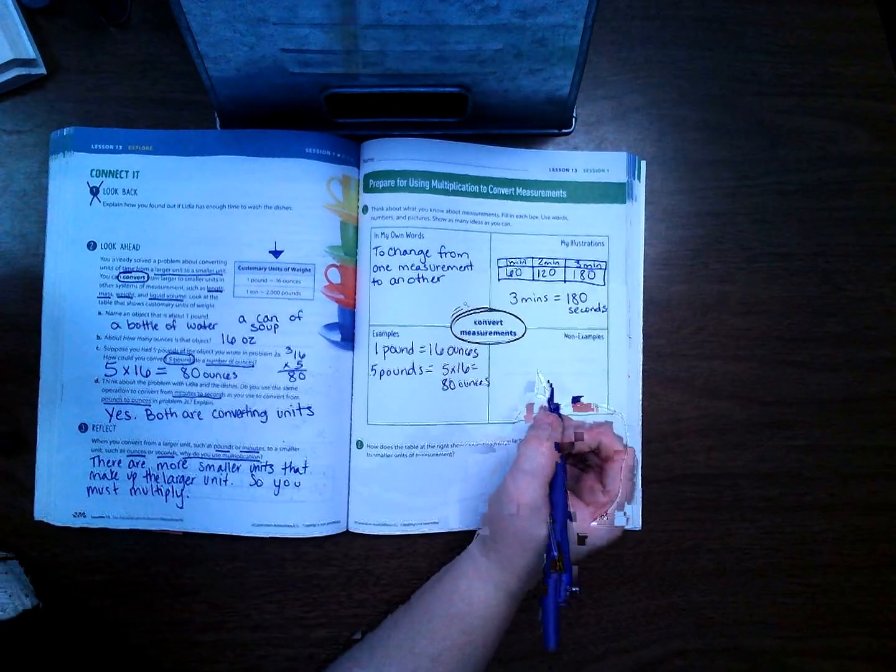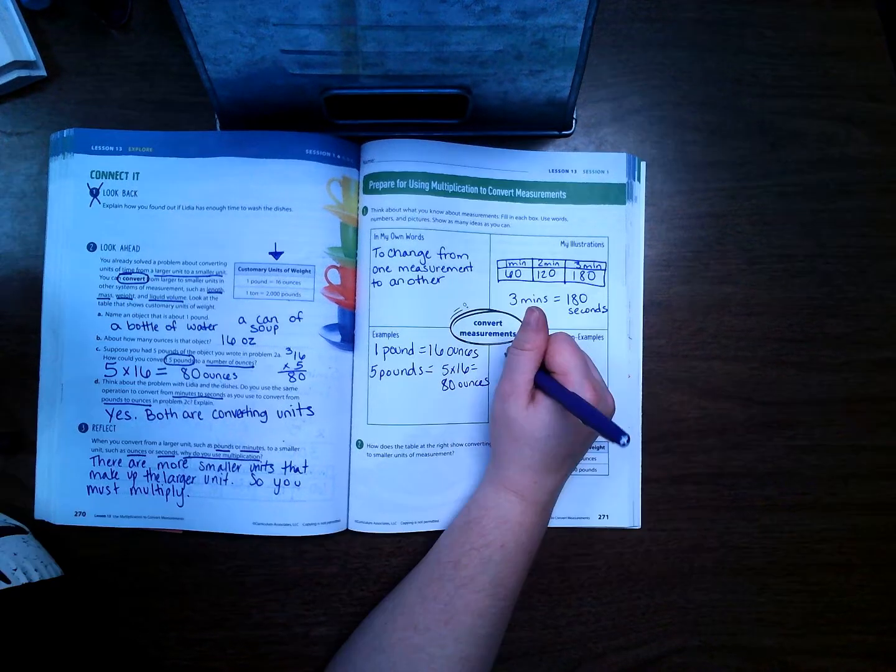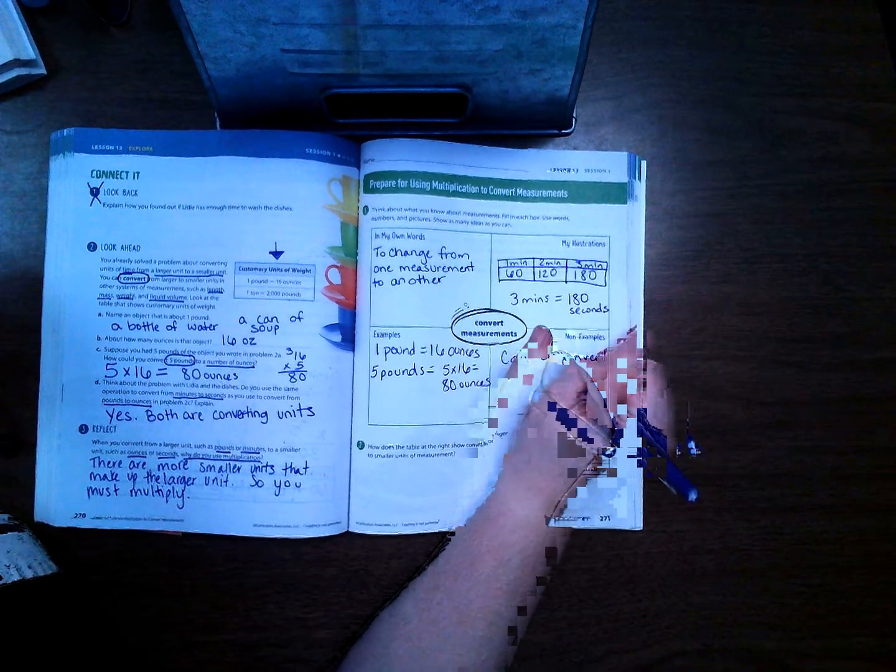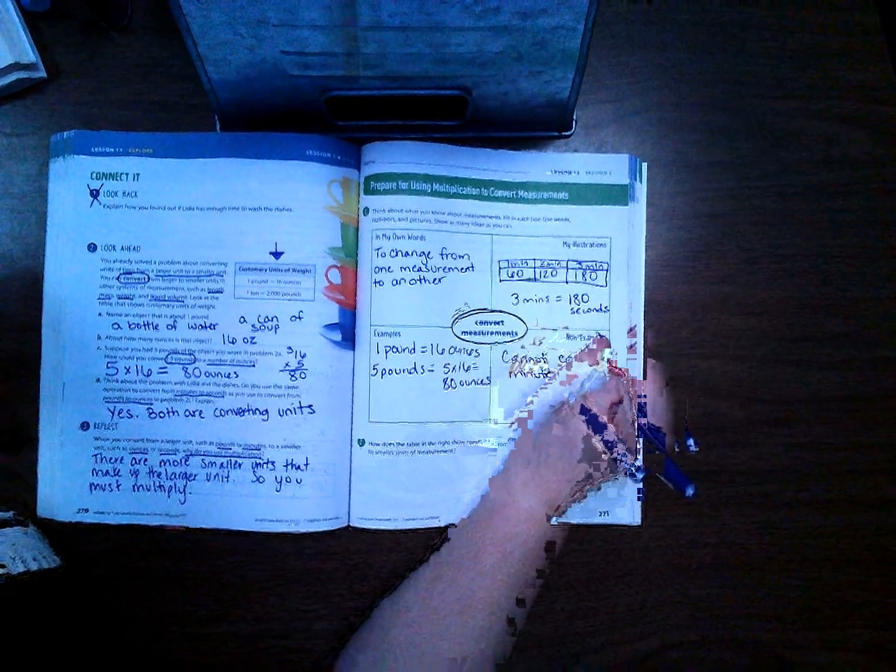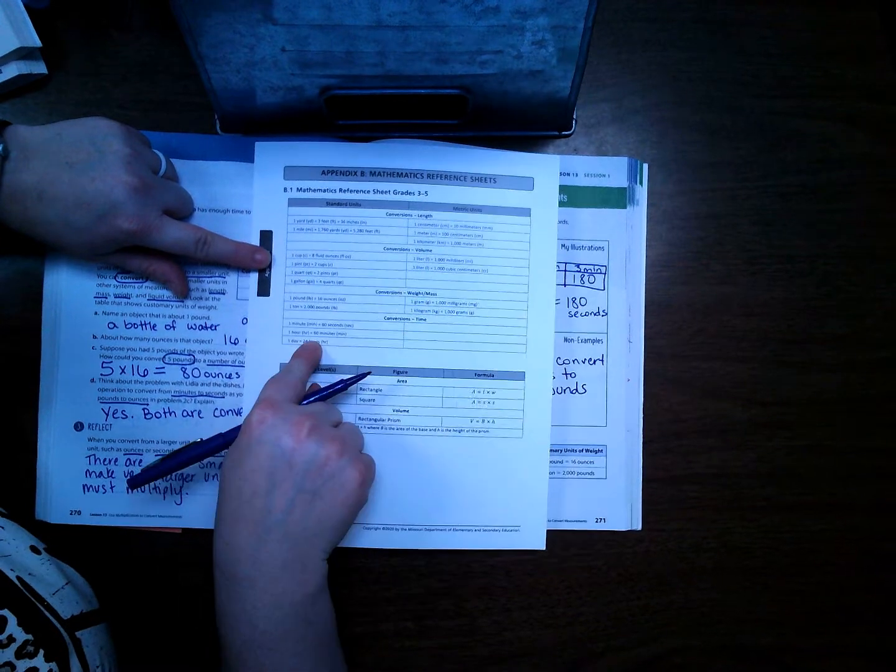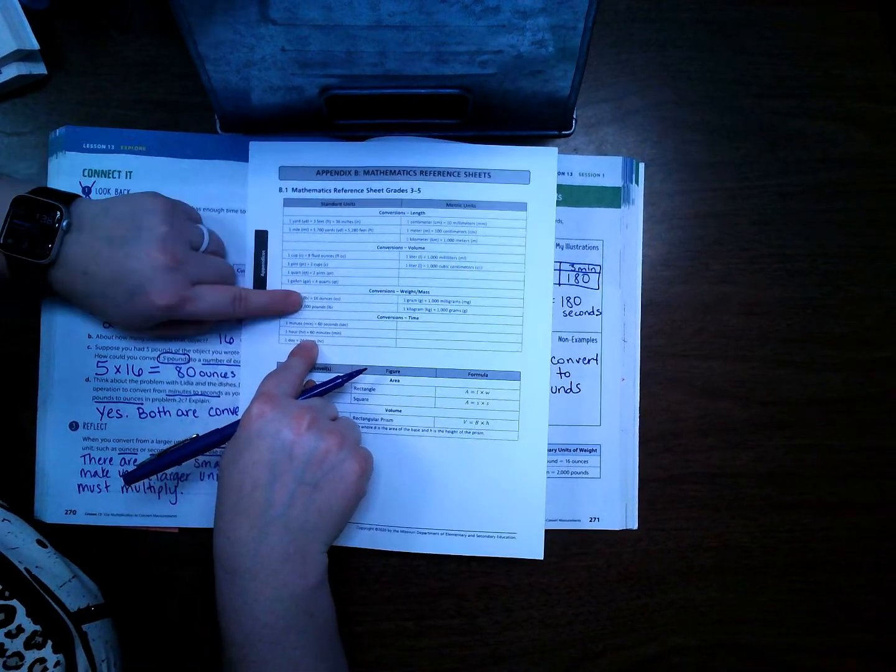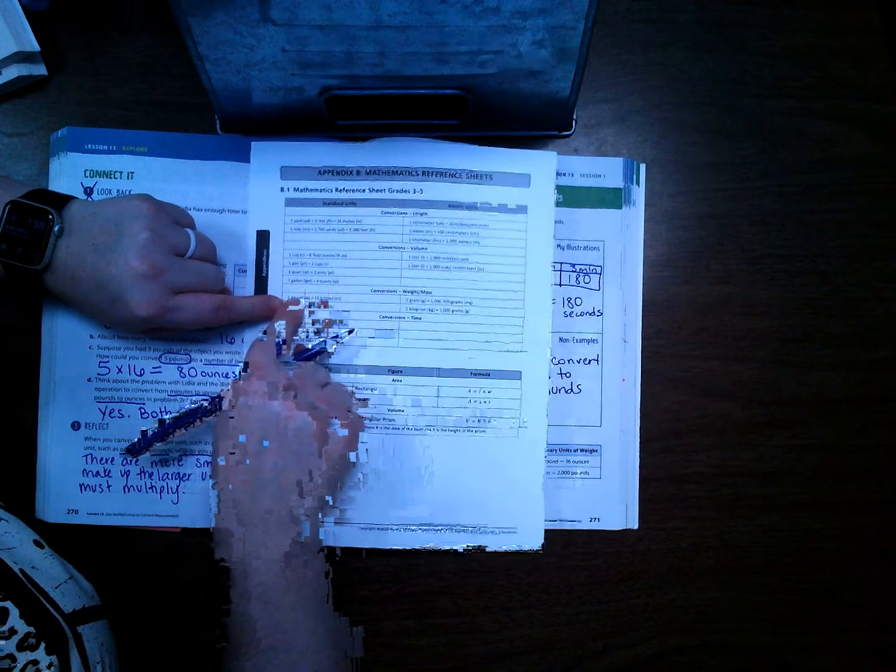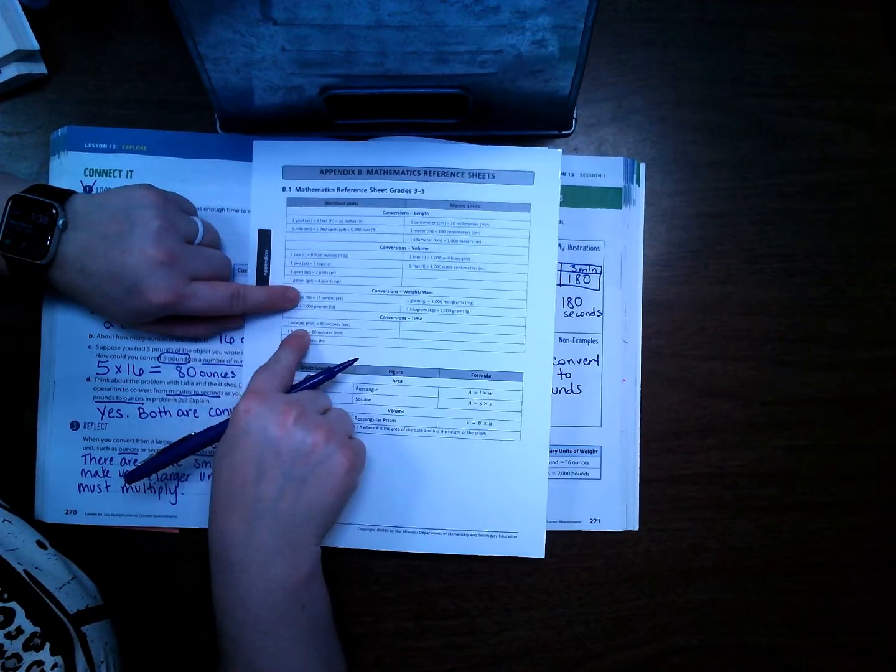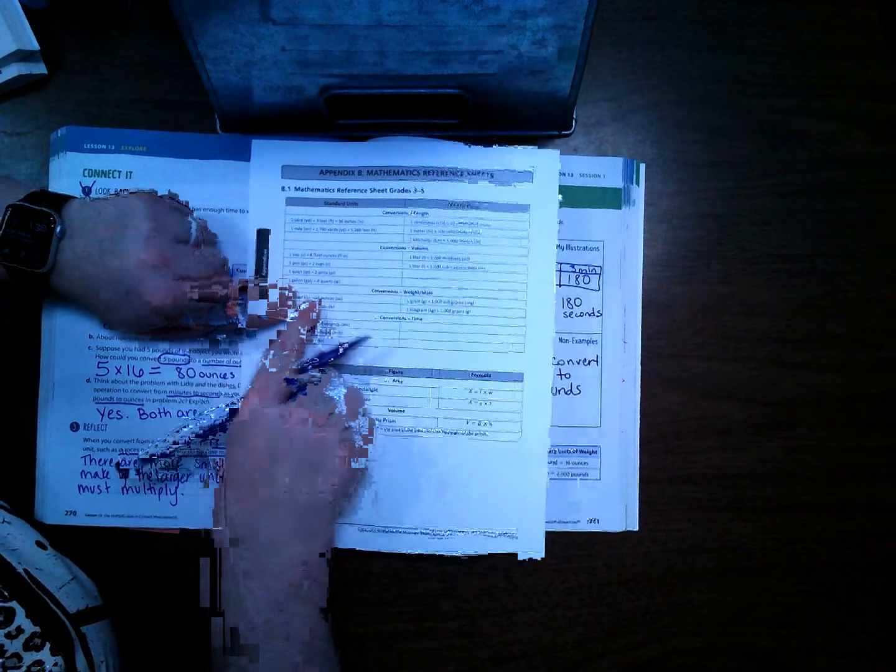Something that is not an example is that you cannot convert minutes to pounds. Let me show you on this. Minutes are down here in this section, so the only things that you can convert are things in this section with each other. Pounds are up here, so they have to stay in this section. You cannot convert minutes with pounds because they don't cross over with each other.